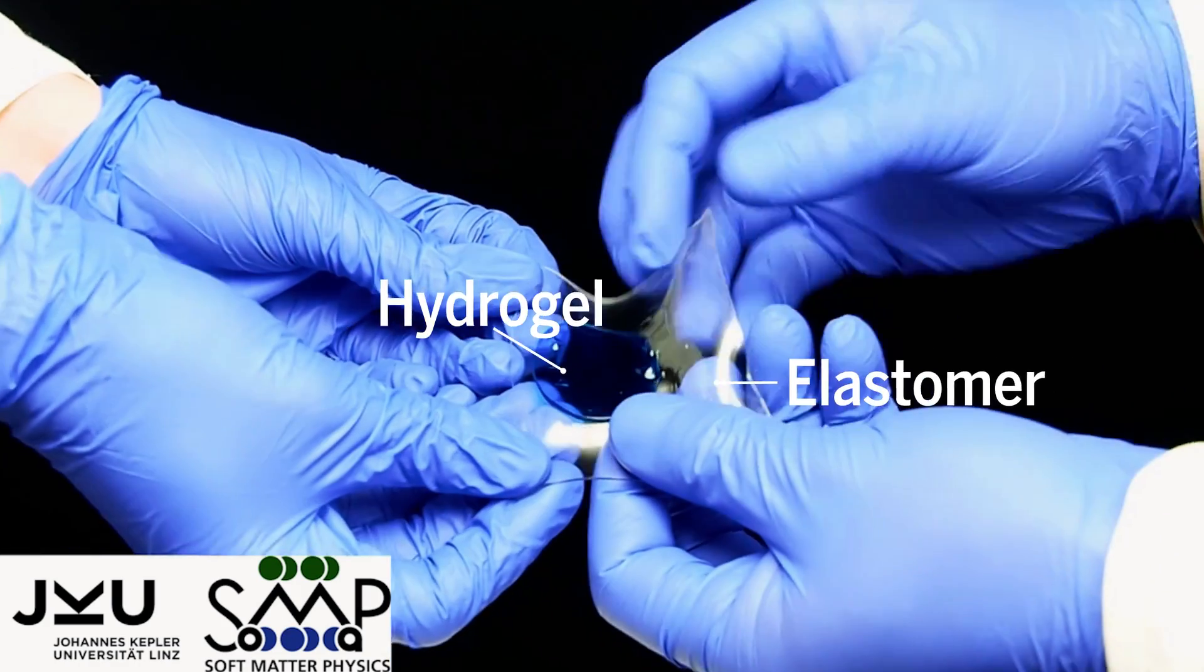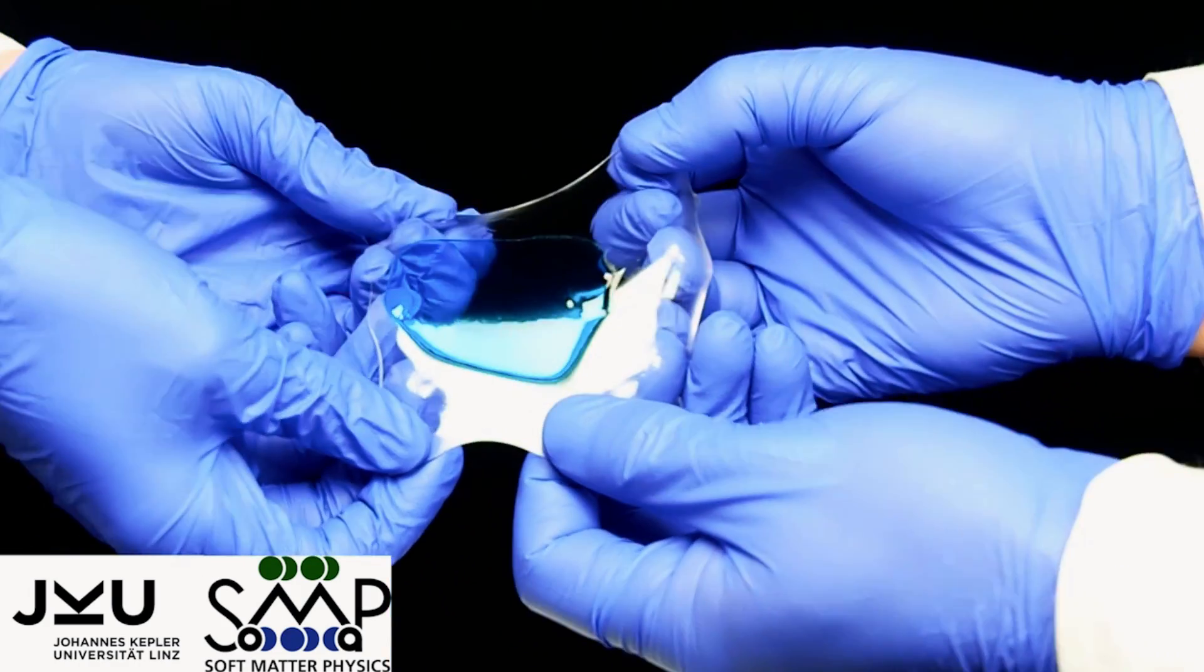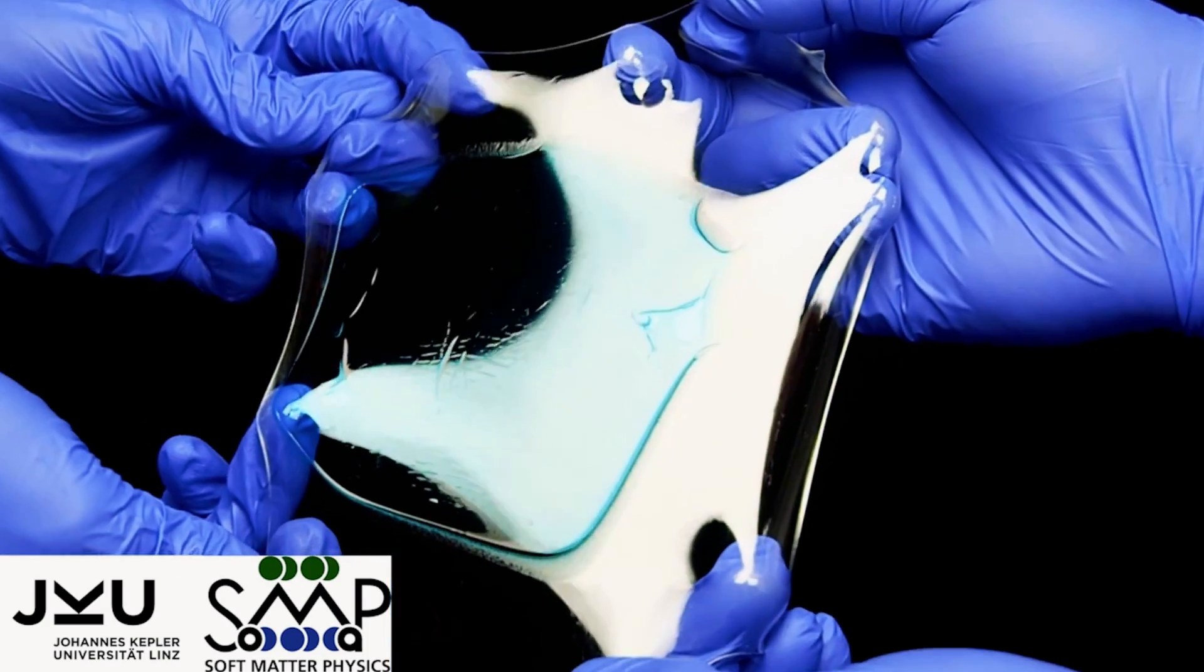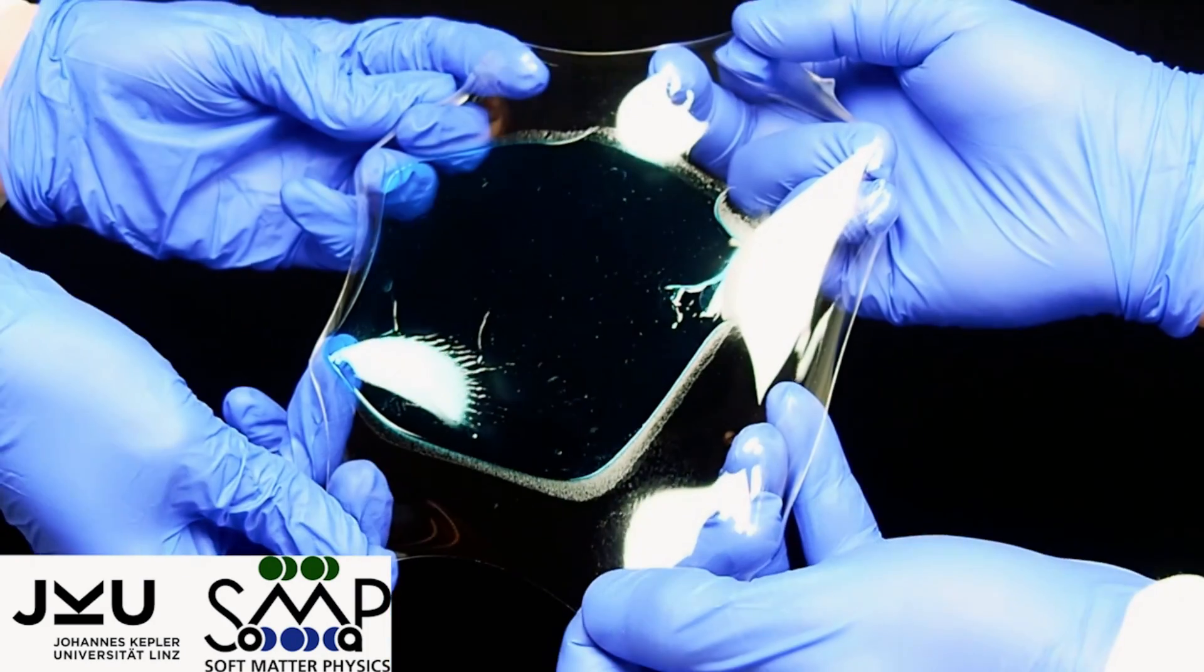Here, a hydrogel and an elastomer, a rubbery material, are combined together with the new glue. You can stretch them by a thousand percent, and they still don't come apart.